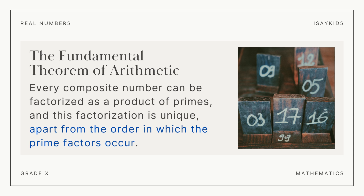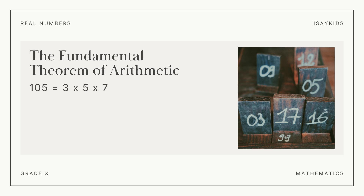For example, 105 can be written as 3 into 5 into 7. Now these are the only factors that can represent 105. Only the order can change and not the prime factors.